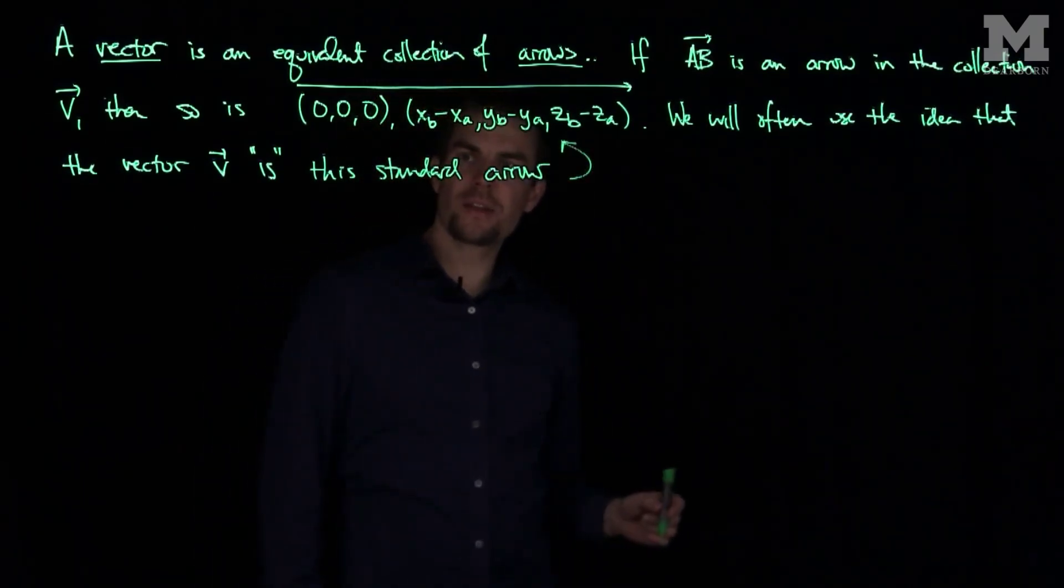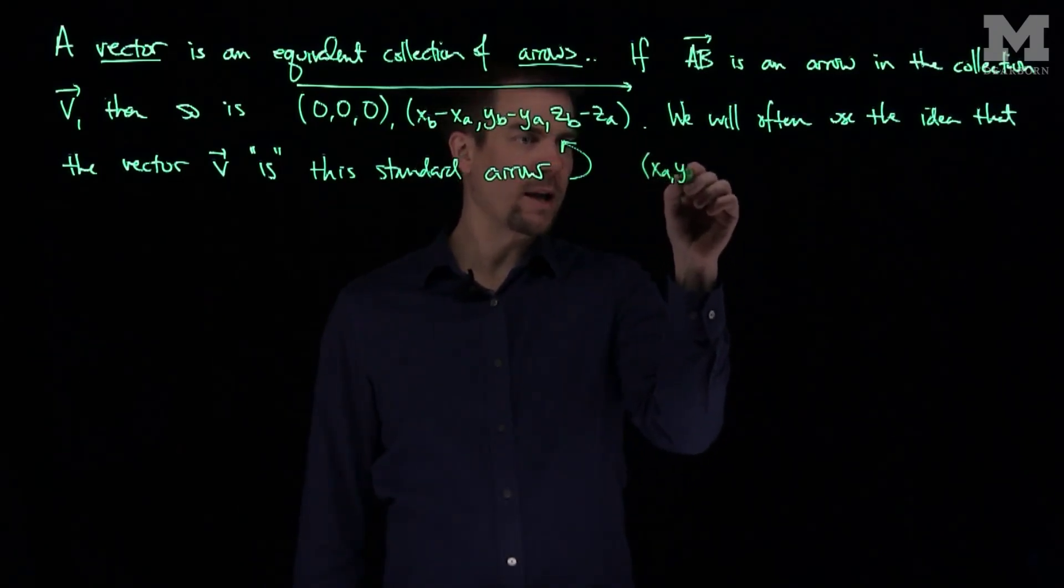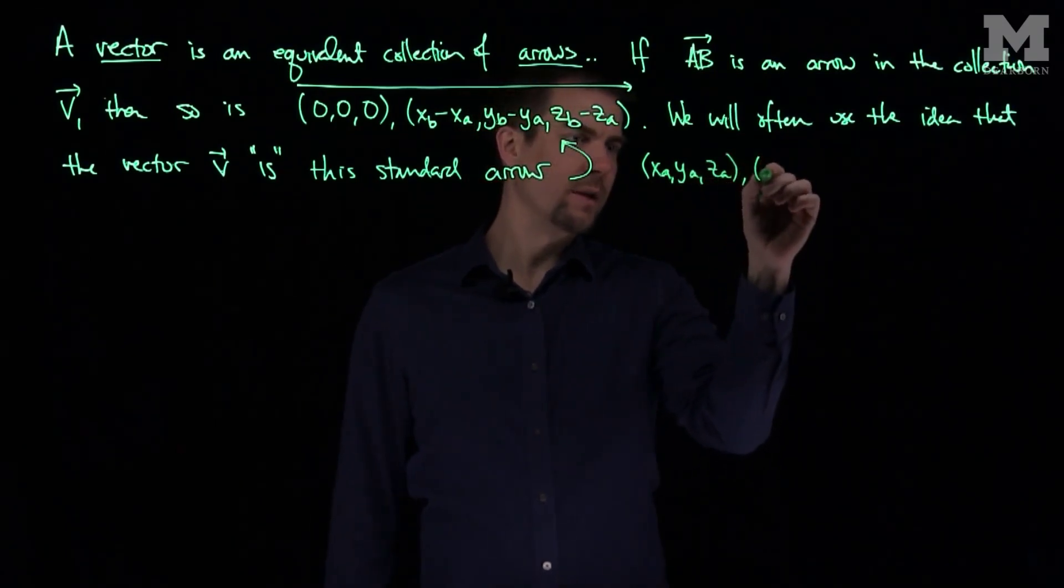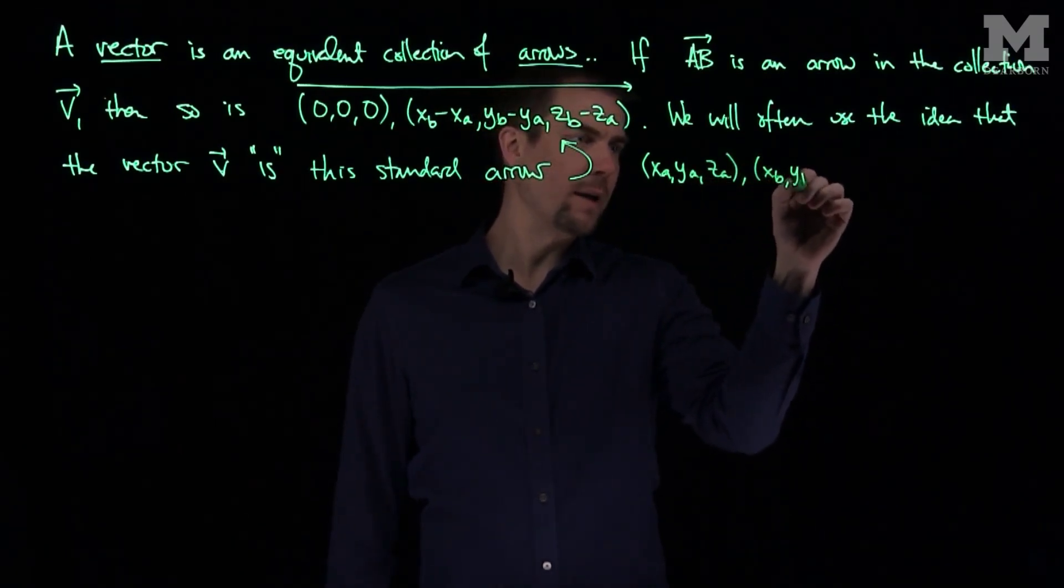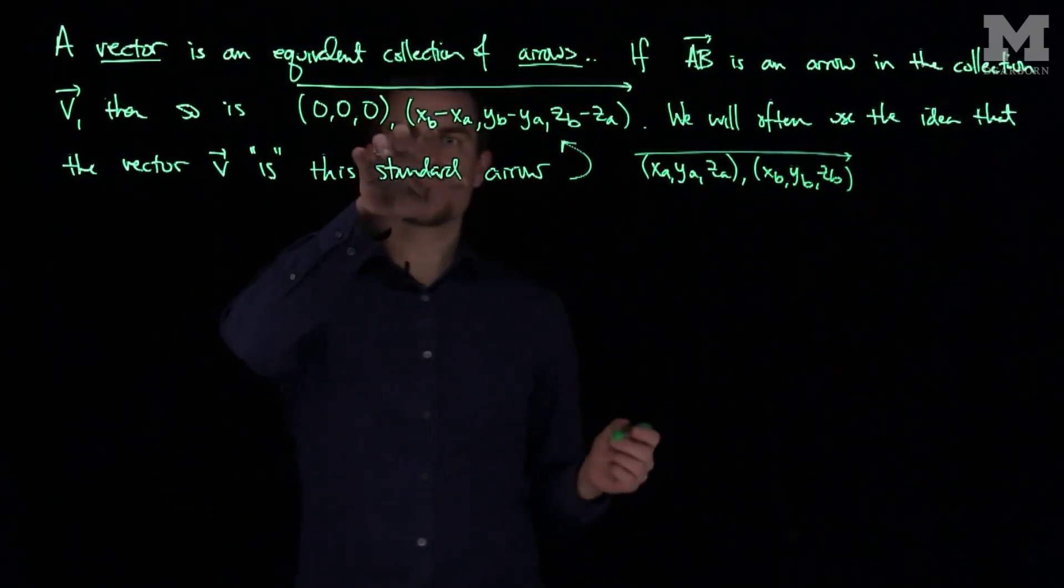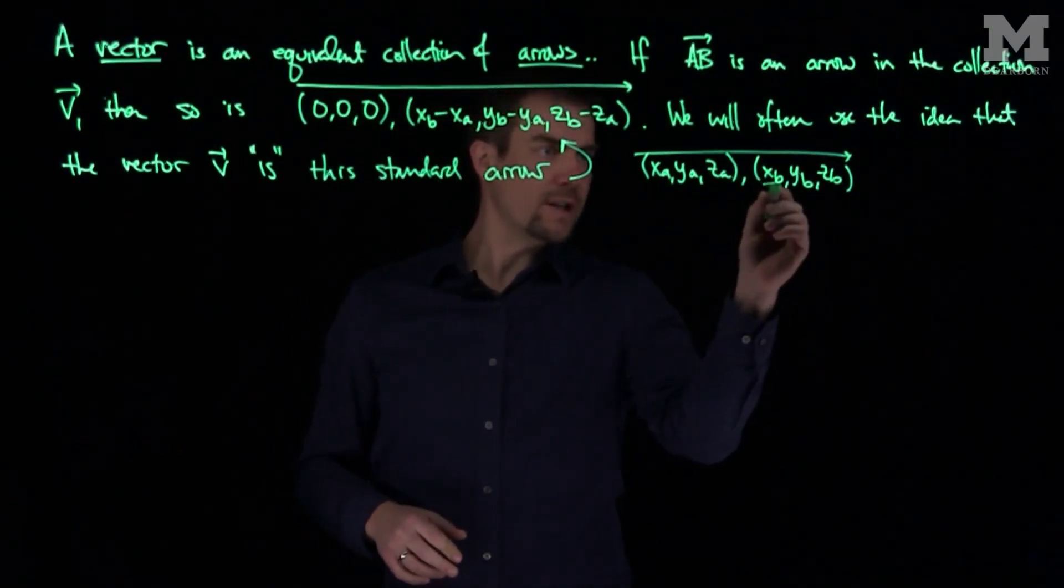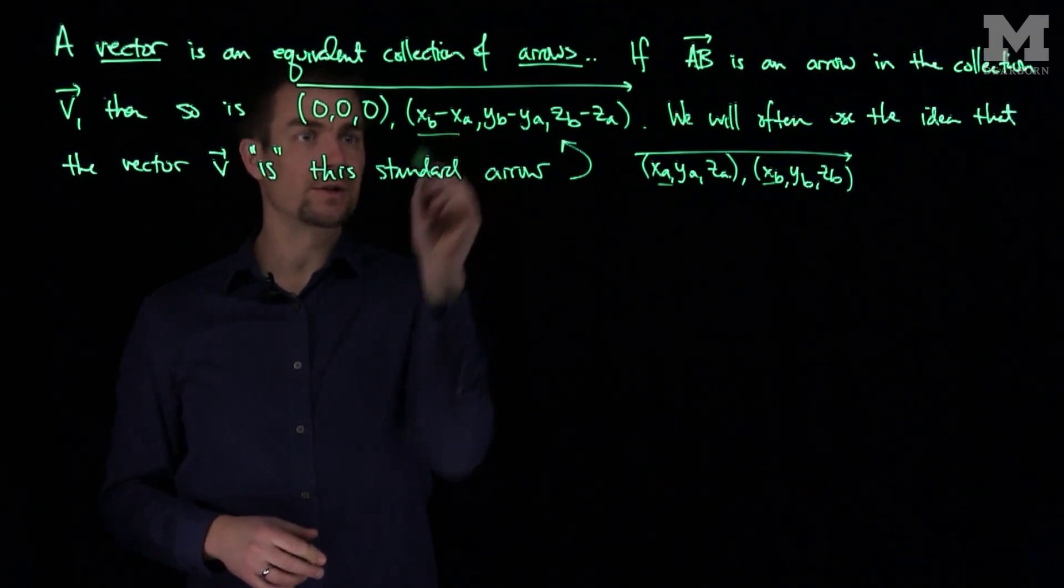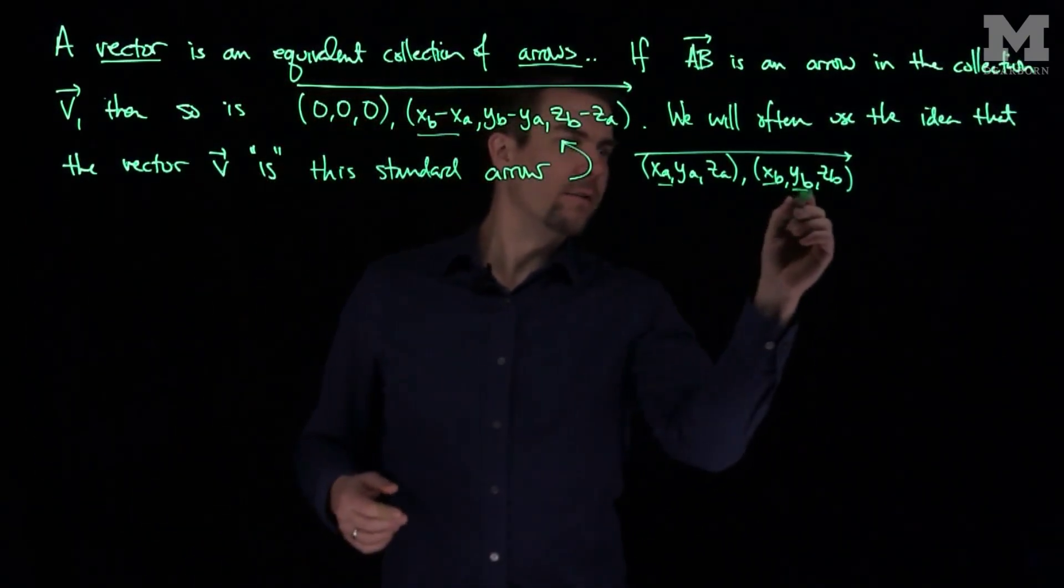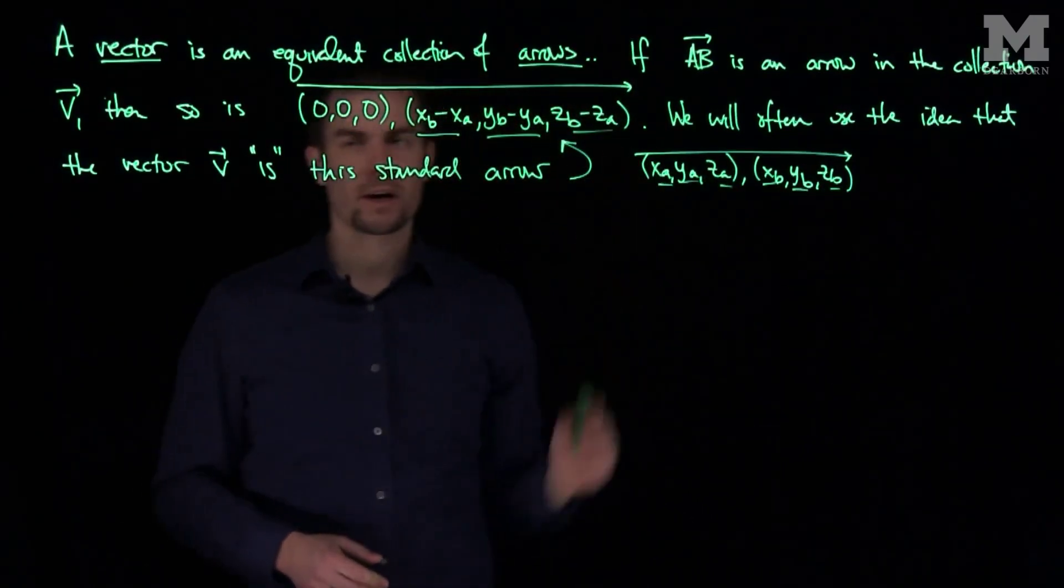We can see that this is indeed equivalent, because if we have the point (XA,YA,ZA) to the point (XB,YB,ZB), then the difference of the X's is XB-XA, whereas the difference here is XB-XA minus zero. The difference in the Y's is YB-YA, and ZB-ZA.